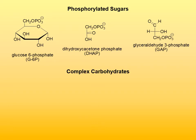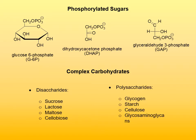Complex carbohydrates are composed of monosaccharides joined one to another by forming oxygen-glycosidic bonds. We will see later what glycosidic bonds are. Some important complex carbohydrates are disaccharides — examples include sucrose, lactose, maltose, and cellobiose — and polysaccharides. Some important polysaccharides are glycogen, starch, cellulose, and glycosaminoglycans.